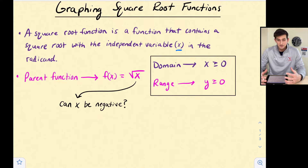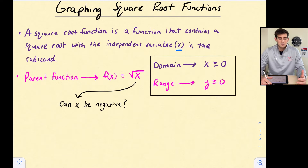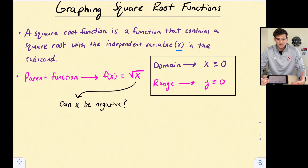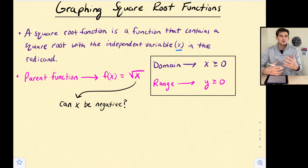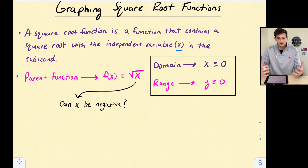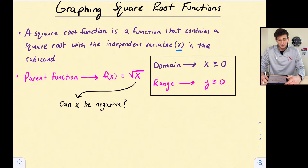Just as we talked about linear functions, exponential, absolute value, and quadratic, a square root function also has a parent function — the most simple equation or function that we could graph — and then all other graphs of that parent function are transformations. So our parent function here is f(x) equals the square root of x.